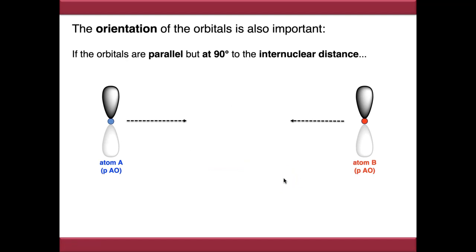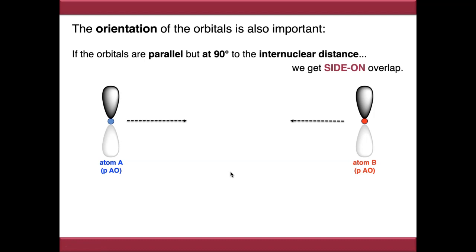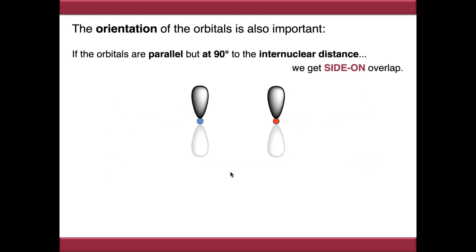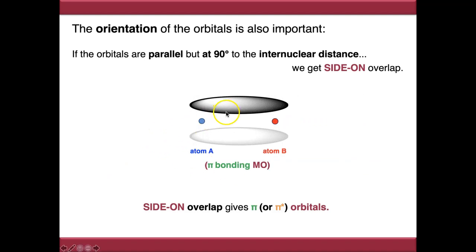If the orbitals are parallel but at 90 degrees to the internuclear distance - in this case two unhybridized p atomic orbitals whose lobes are not pointing directly at each other but are parallel - we get a different type of bonding. This is side-on overlap. Bringing these two orbitals together gives a constructive interaction because the phases match, but we now get all of our orbital density above and below. This 90-degree side-on overlap gives us what we call a pi orbital - in this case a pi bonding molecular orbital.